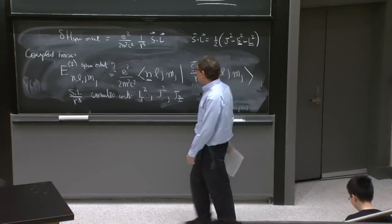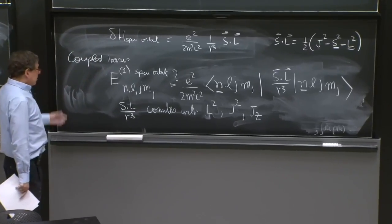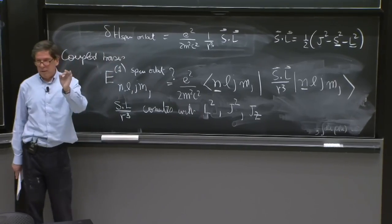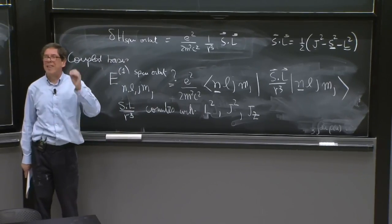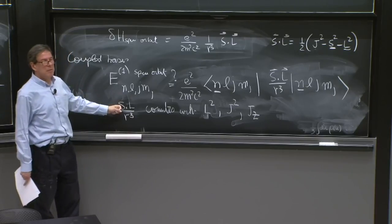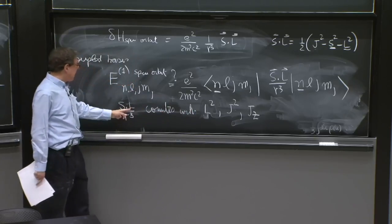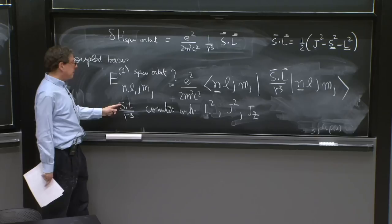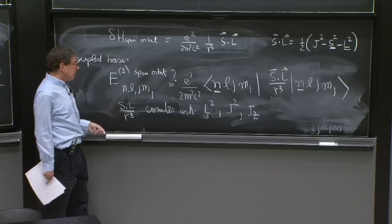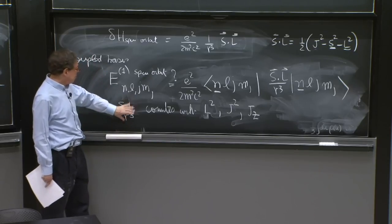And why does it commute with all of them? You can see it in several ways. Let's do l squared. l squared is Casimir. It commutes with any li. It doesn't even think about s, because it doesn't know anything about s, so it commutes with s. So l squared commutes with any li, and it commutes with s. And l squared is an invariant that commutes with r squared, because r squared is rotational invariant. So everything commutes with that.